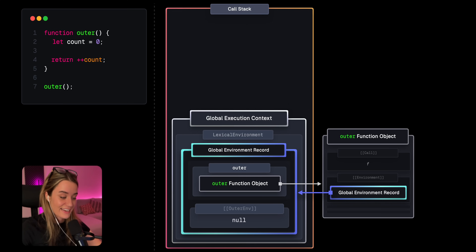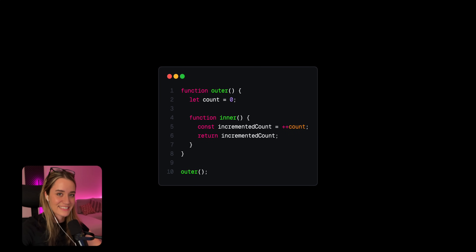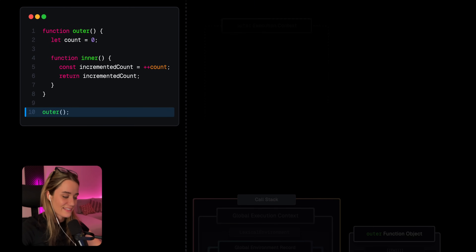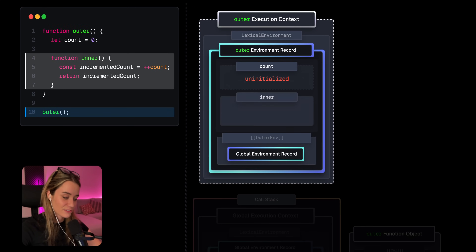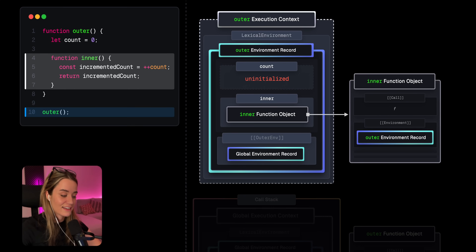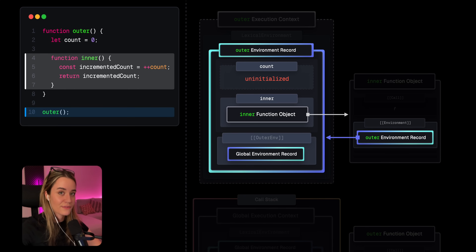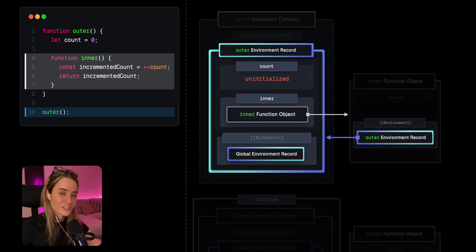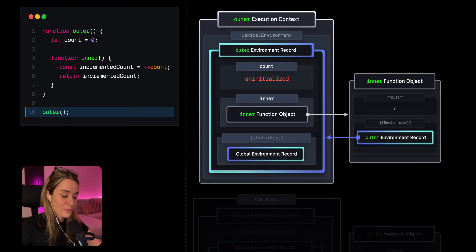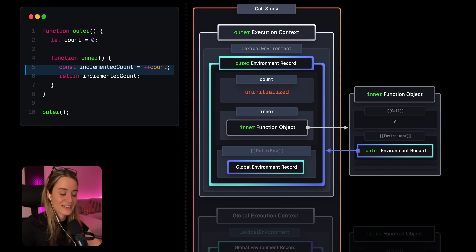However, it is possible to retain a reference to this function environment record, in which case it does not get garbage collected and we still get to use the variables within outer. The first step to make this happen is to have a nested function — for example, inner. In that case, a new inner function object gets created. Function objects contain an internal environment property, and this holds a reference to the environment record in which they are defined, which in this case is the outer function environment record.